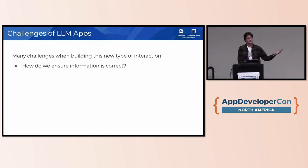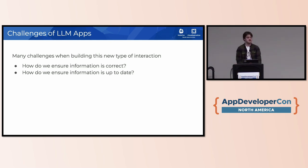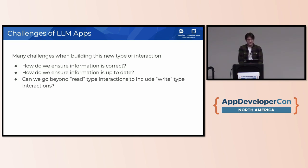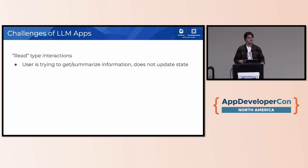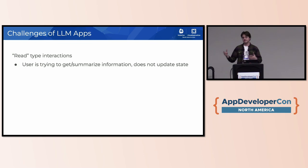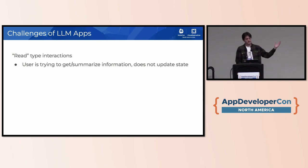Specifically, questions like: how do we make sure the information this model gives us is correct? Even if it's correct, how is it the most up-to-date — it might have been correct yesterday but not today. And another interesting one: can we go beyond read-type interactions to include write-type interactions? A read-type interaction is where the user is trying to get or summarize information but not updating any state. This is where we've seen most language model applications so far.